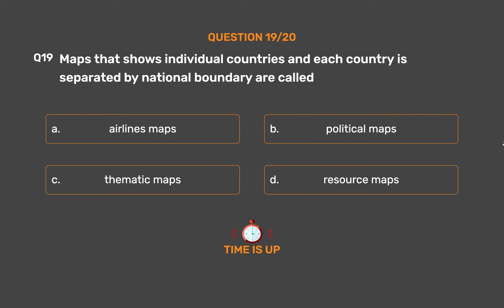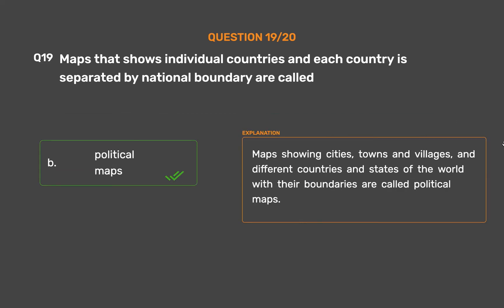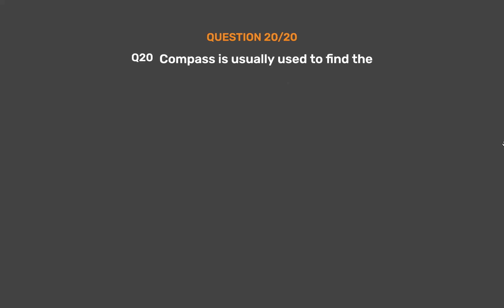The correct answer is Option B: Political maps. Maps showing cities, towns and villages, and different countries and states of the world with their boundaries are called political maps.